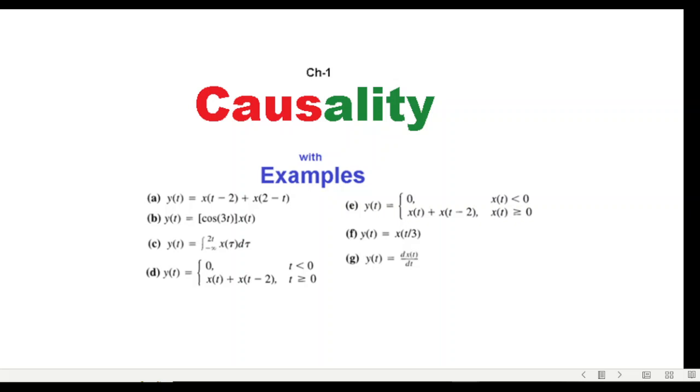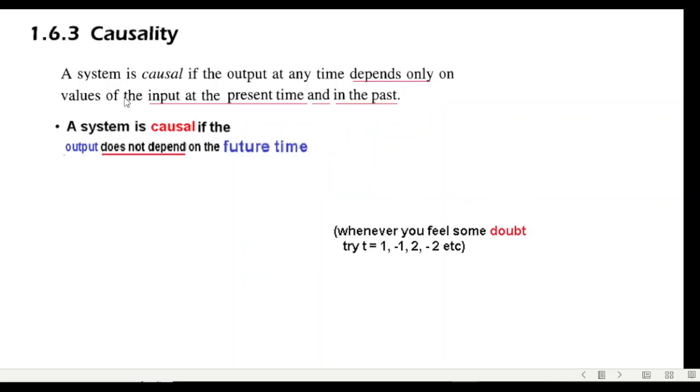This is the fourth video of the series on system properties, and this video will be discussing causality property with examples. So first of all, let's understand what causality means. A system is causal if the output at any time depends only on the values of the input at the present time and in the past.